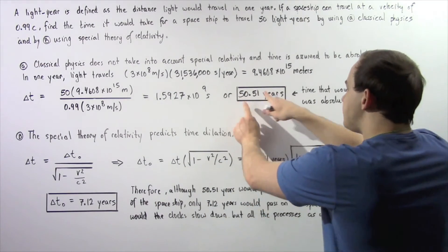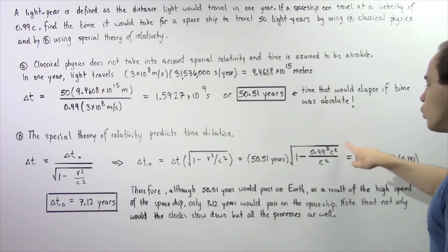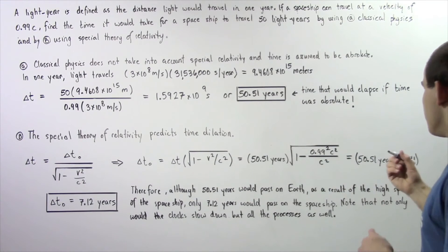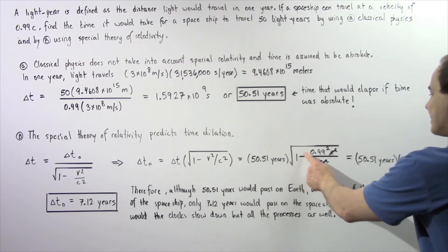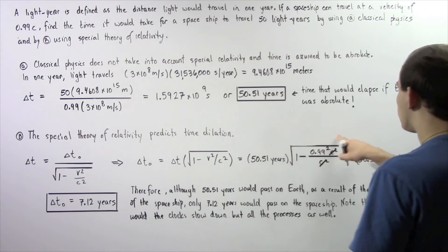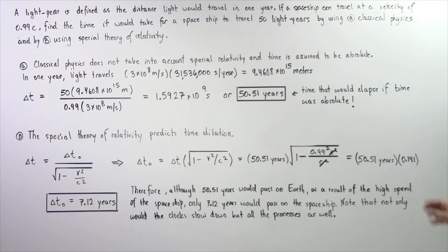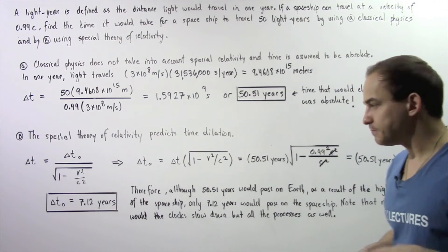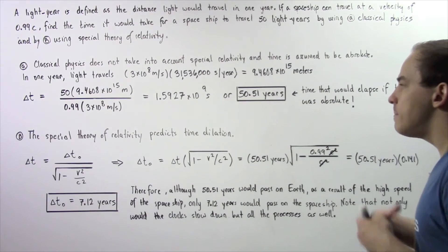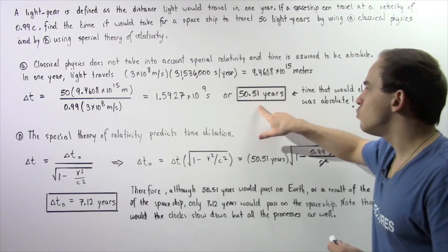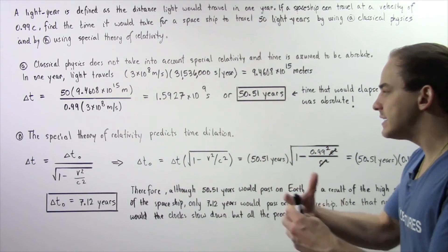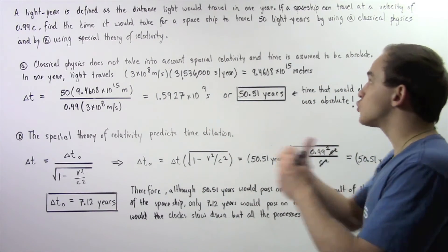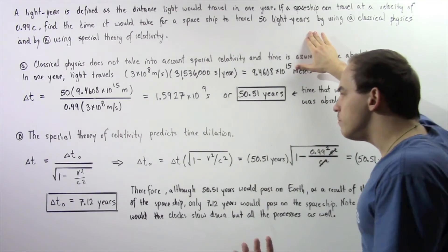Plugging in values: ΔT is 50.51 years, multiplied by √(1 − 0.99² × c²/c²). The c² terms cancel, leaving √(1 − 0.99²). Taking the square root gives approximately 0.141. Multiplying 0.141 by 50.51 years gives about 7.12 years. So even though people on Earth experience 50.51 years, the people on the spaceship would only experience 7.12 years — the time to travel 50 light years assuming time dilation.